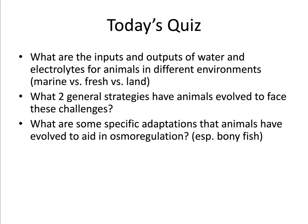In today's quiz linked with this lecture, you need to figure out three major things. Number one: what are the inputs and outputs of water and electrolytes for animals in different environments — marine, freshwater, or land? Number two: what two general strategies have animals evolved to face these challenges? And lastly, what are some of the specific adaptations that animals have evolved to aid in osmoregulation — especially in bony fish in freshwater and saltwater environments?